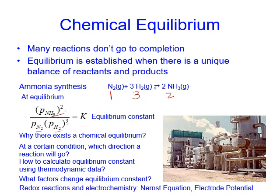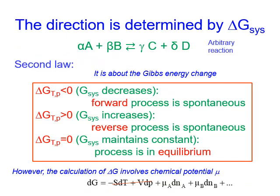We will also look at redox reactions and electrochemistry, and derive the Nernst equation and the equation to calculate electrode potential. Our discussion is based on the second law of thermodynamics — that is, the Gibbs energy change for the chemical reaction.